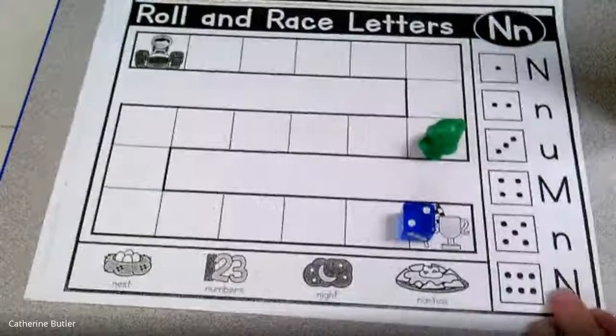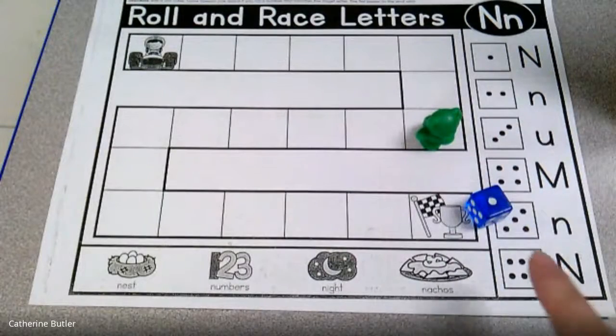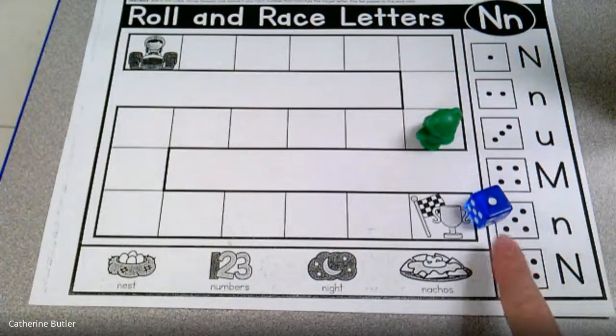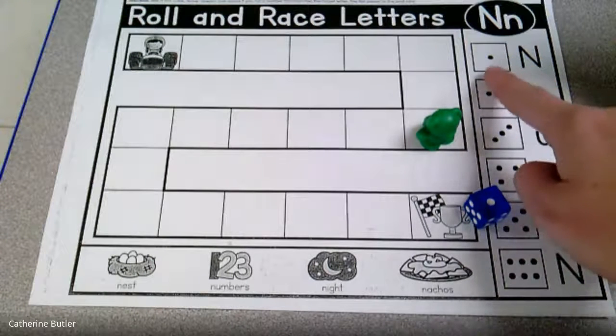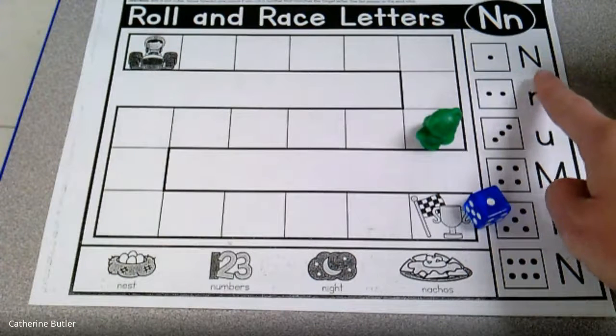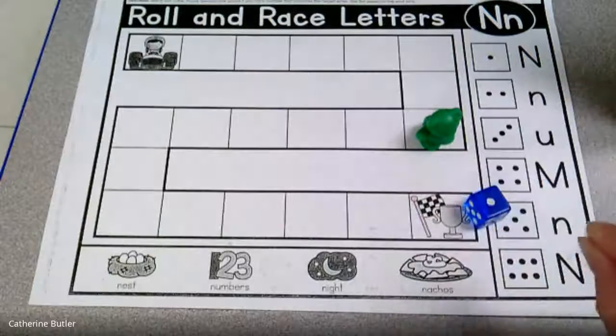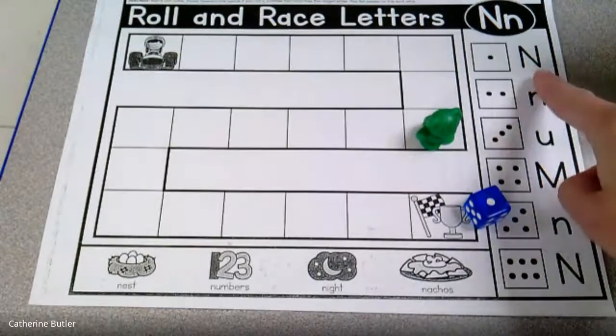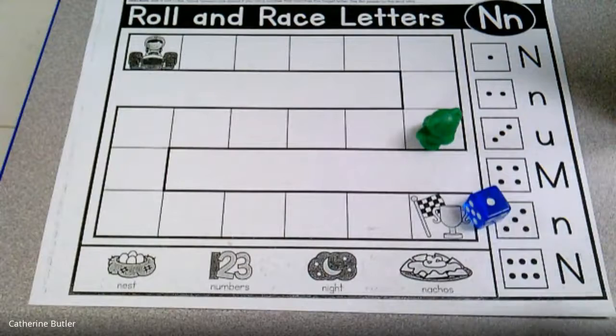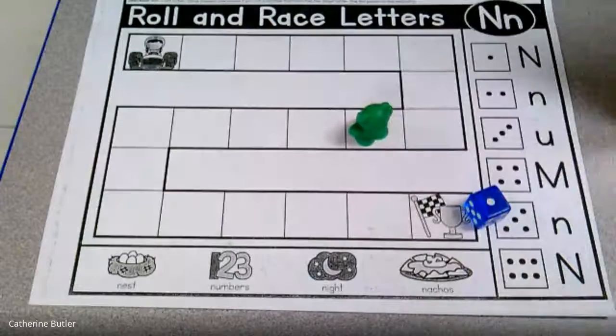Alright, I'm gonna roll one more time. Ooh, what number did I roll? One. Alright, let's find it. Oh, there it is. Now let's look at this letter. Is that the letter N? Yeah, that's the uppercase letter N. Before I move my piece, what sound does N make? N says N. Alright, now I can move my bear.